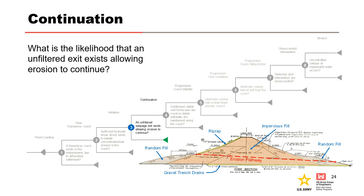Node 3: What is the likelihood that an unfiltered exit exists allowing erosion to continue? As shown in the embankment cross section, there was no chimney or downstream filter included in the original embankment design. The random fill berms, where the leakage exits were located, were comprised primarily of shale and sandstone, which did not provide any filtering action. Therefore, there was an unfiltered exit at the time of the internal erosion incident.